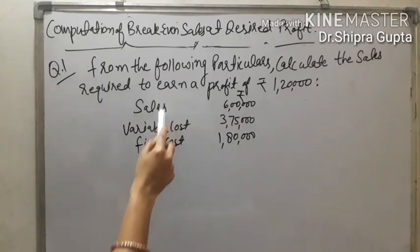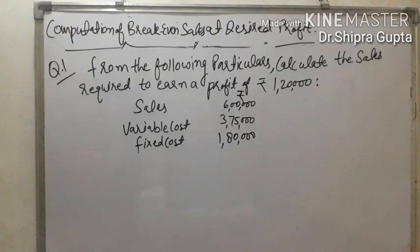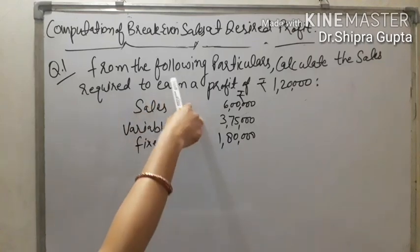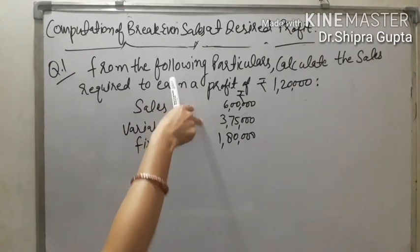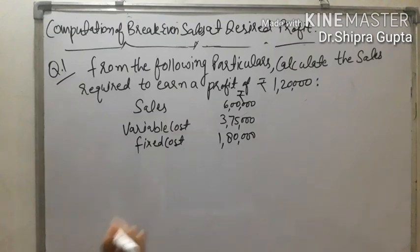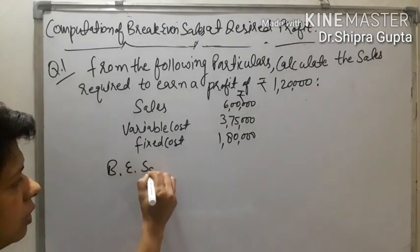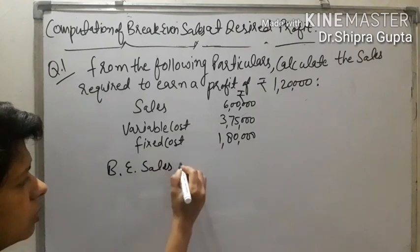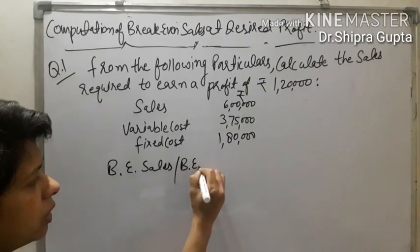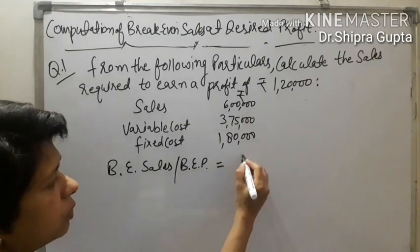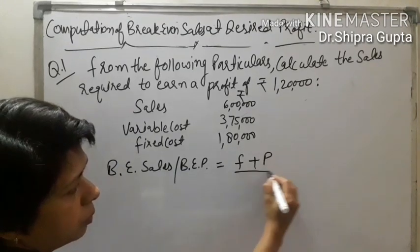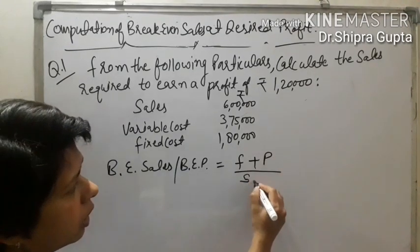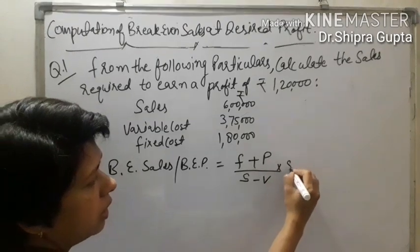In this question, sales and variable cost are given as lump sum amounts, not per unit. So we can apply only the rupees term formula, not the units formula. We will apply: Break-Even Sales = (Fixed Cost + Profit) / (S − V) × S.